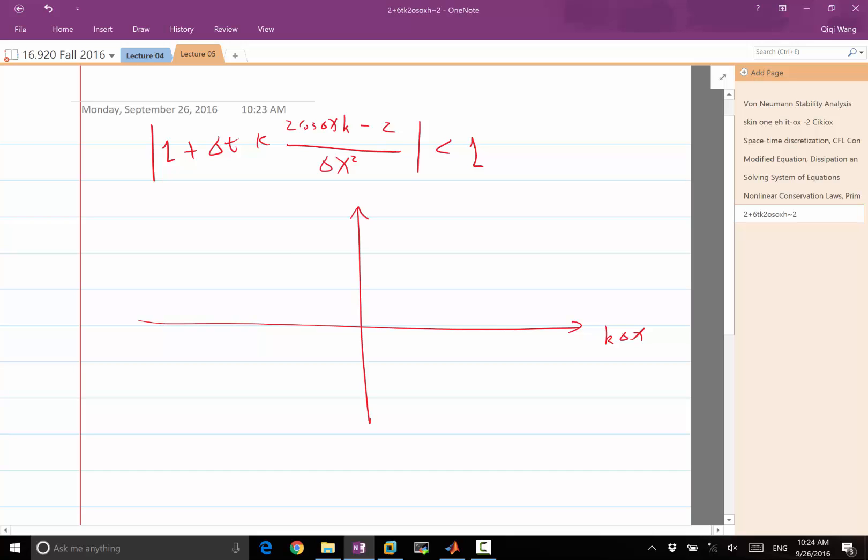Let's plot this 2 cosine k delta x minus 2 here, and we know we need to multiply this thing by that, so that's a constant.